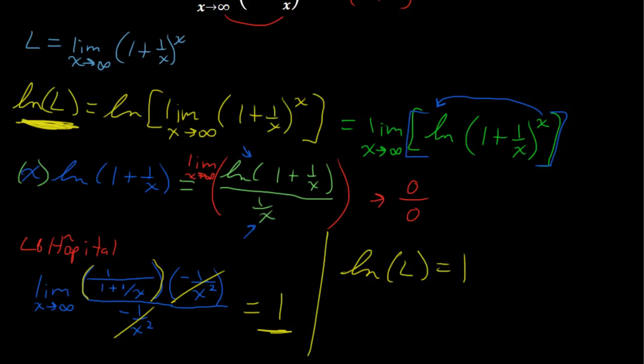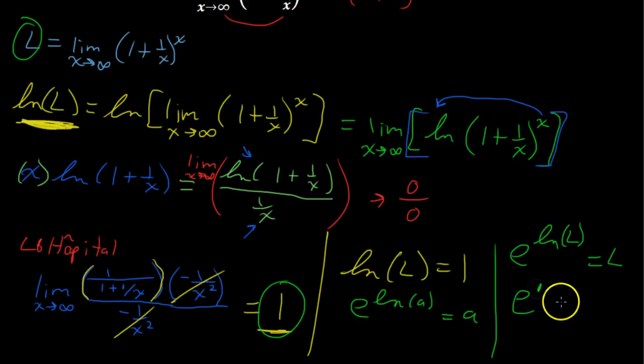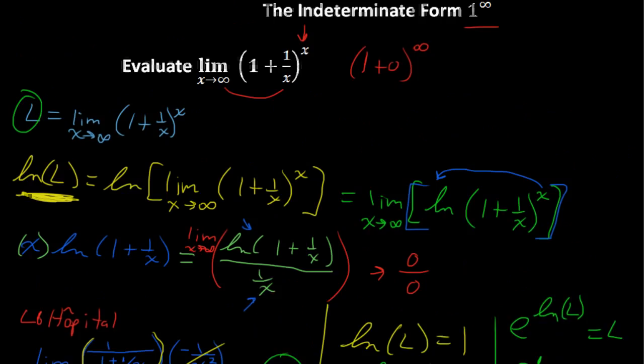Well, there's a property that says that if we raise an expression e raised to the natural log of a, then that just gets us a. So if we raise e to the natural log of L, our limit, that should just get us our limit L. And that's what we're looking for. So e to the natural log of L, where this equals 1, so e to the first power equals L. Or in other words, our limit that we were looking for is e, e to the first, or just e. So that's the process when we have some indeterminate form of 1 to the infinity.